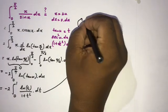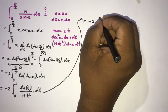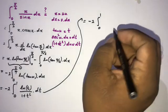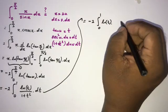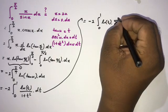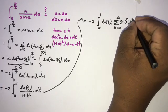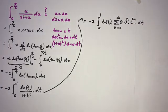Now, instead of 1/(1 + t²) I am going to use an infinite series expansion. We can write 1/(1 + t²) as the sum from n = 0 to infinity of (−1)^n times t^(2n). So the integral becomes minus 2 times the integral from 0 to 1 of natural log(t) times the sum of (−1)^n t^(2n) dt.